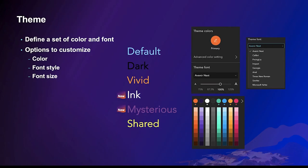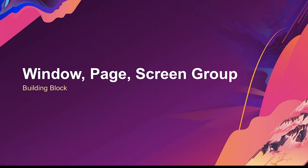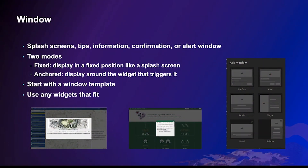The theme is used to define the overall look and feel of the app — you have options to choose color and font. Other building blocks include a window for information and confirmation; you can use the window to display a splash screen or show an alert message nearby a button when clicked.